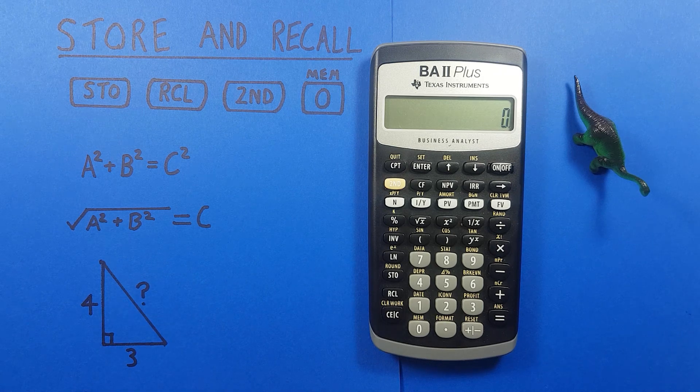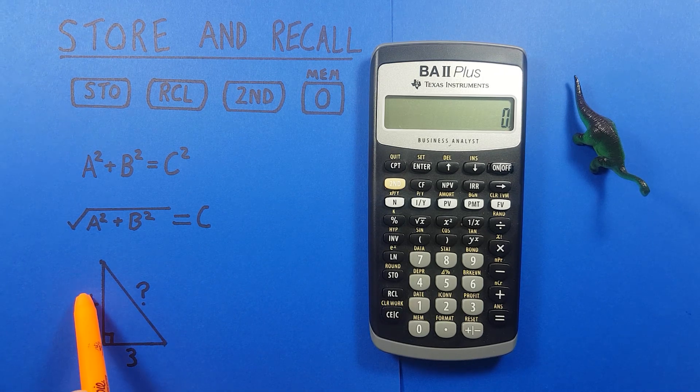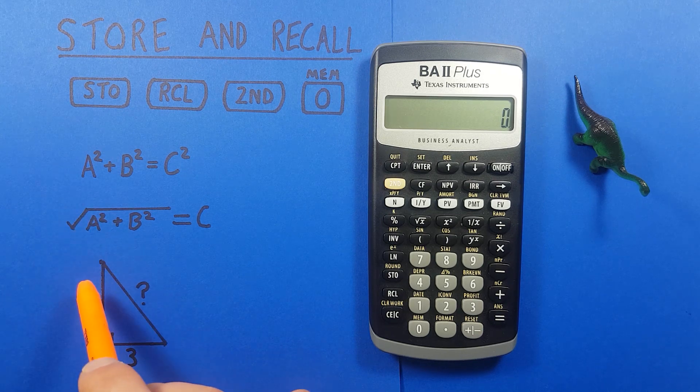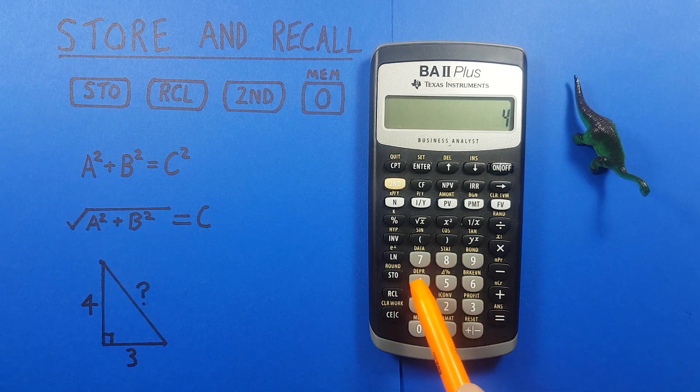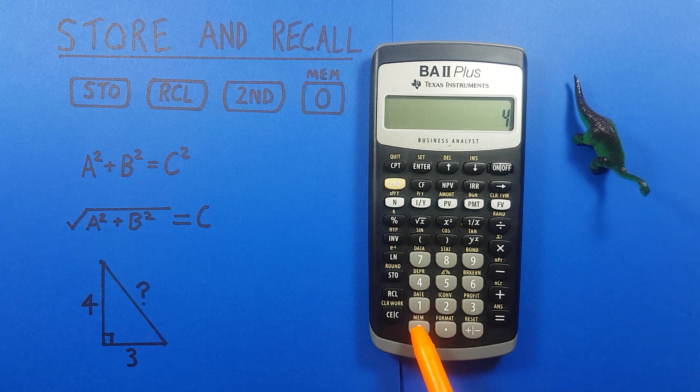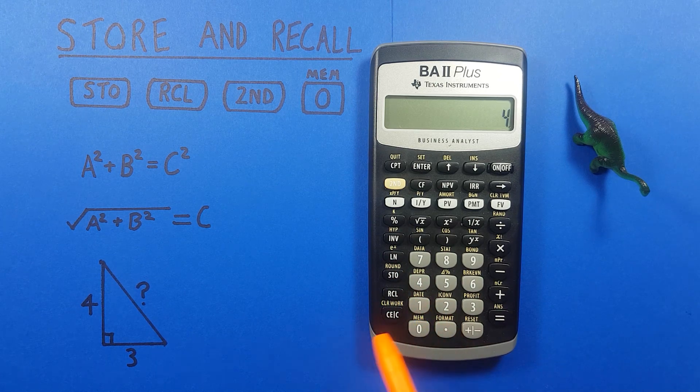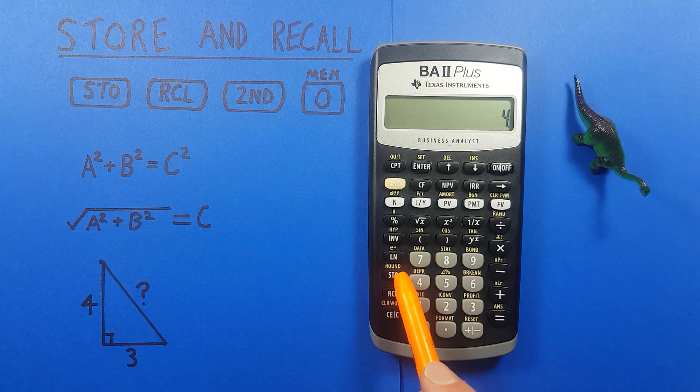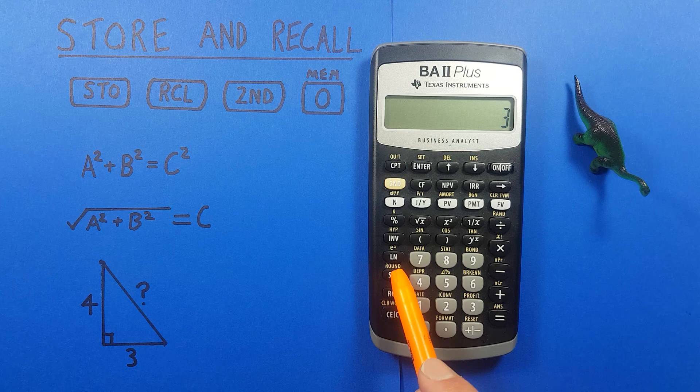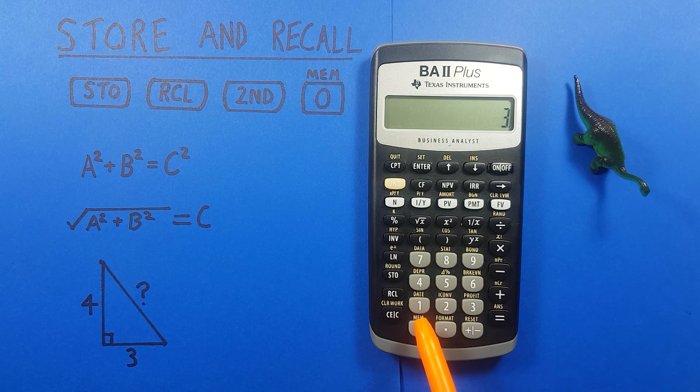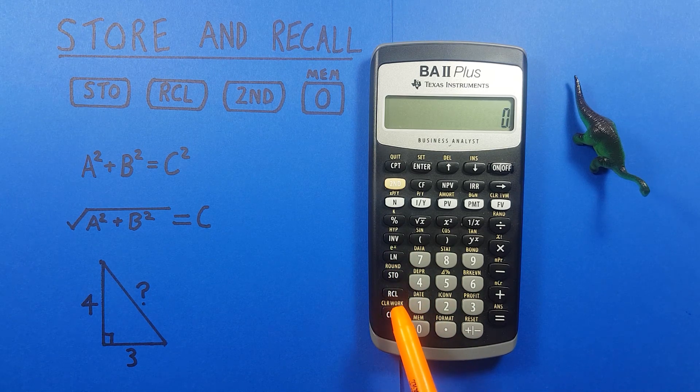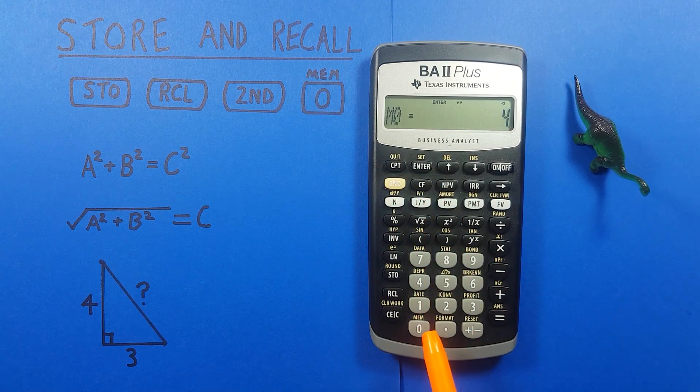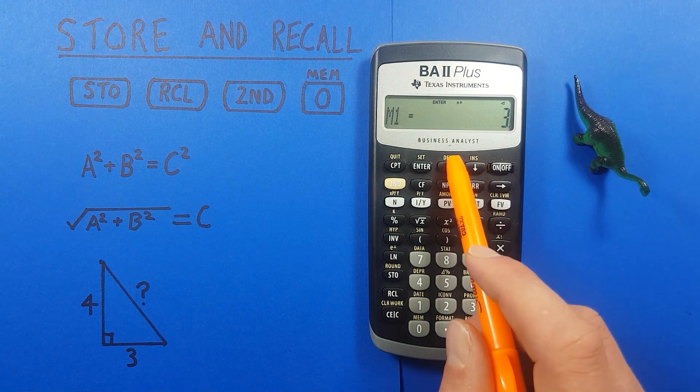What we can do is store our two known sides as a and b. So, let's store 4 as our a. 4 store into 0. And 3 into slot number 1 as our b. So, 3 store 1. There we go. And we can view our memory to confirm it's in there. Yep, 4 and 3. Looks good.